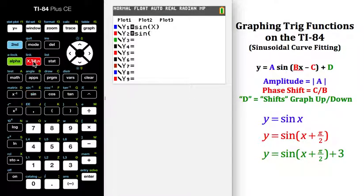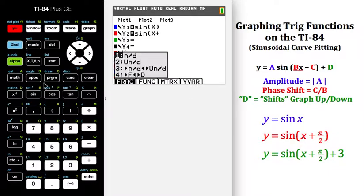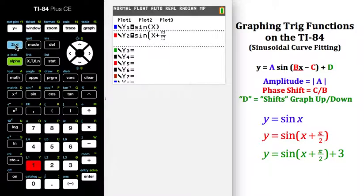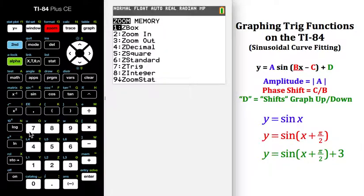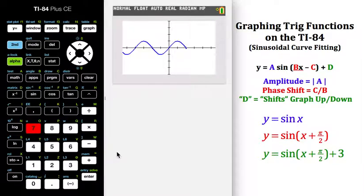Sine of x plus, and then the fraction shortcut, pi over 2. I shouldn't have to zoom trig again once you do it. There's the first original sine graph, and then what has been graphed in red now is sine x plus pi over 2.